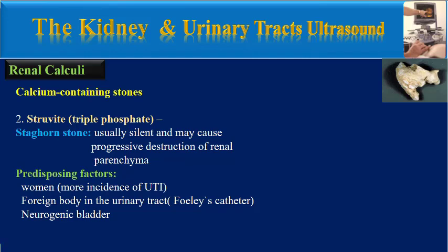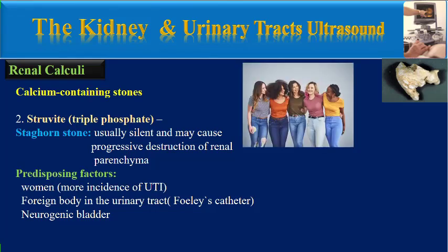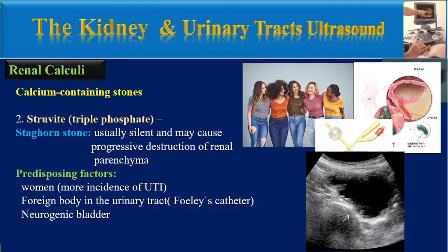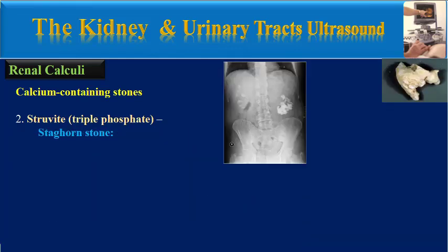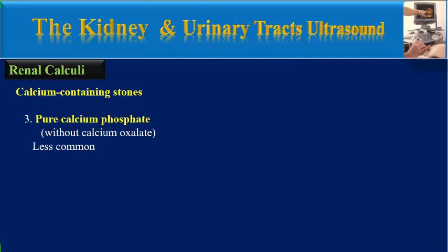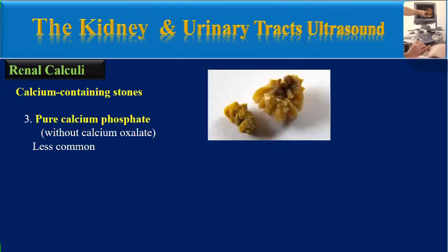What are the predisposing factors for development of struvite stones? The first one: it is more common in women, probably due to the higher incidence of UTI in women. The second is a foreign body in the urinary tract like a Foley catheter, and the third is neurogenic bladder. We can detect the staghorn stone in plain x-ray, ultrasound, and also computerized tomography.